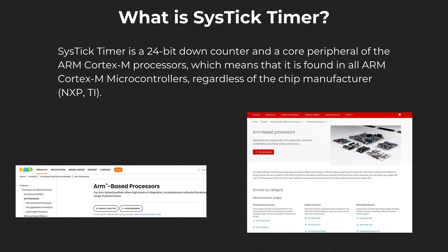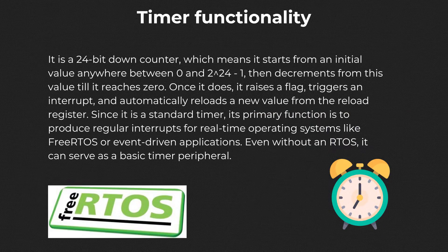The SysTick Timer is a standard 24-bit down counter driven by the processor clock. It is a core peripheral of the ARM Cortex-M processors, which means that it is found across all ARM Cortex-M microcontrollers regardless of chip manufacturer. You may be following this video with an STM32, which is made by ST, but NXP or TI are also manufacturers who have bought the ARM design license to create ARM-based chips. These chips can have different peripherals, but the core peripherals, including the SysTick Timer, are always available.